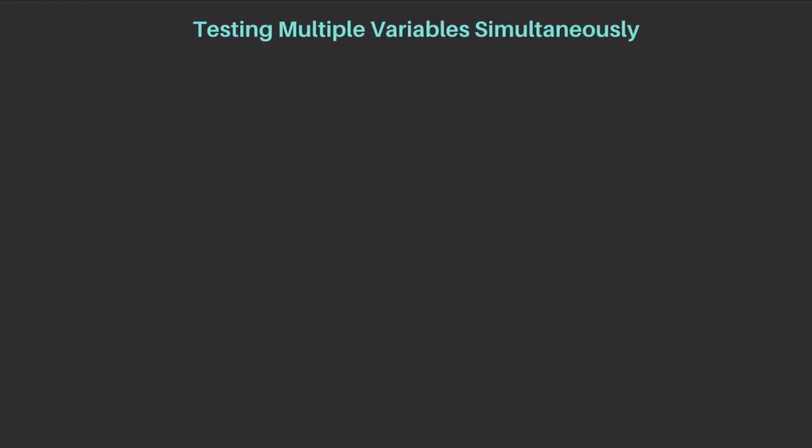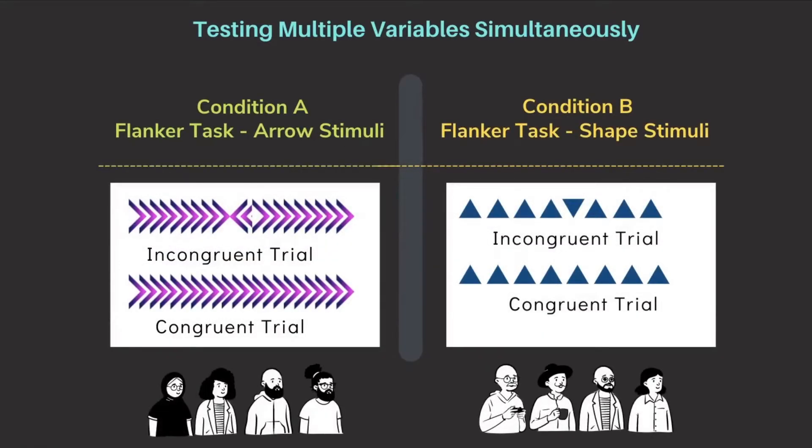Finally, another key advantage of the between-subjects design is that it allows us to collect a large amount of data within a short period of time by allowing us to simultaneously test multiple variables, conditions, and experimental groups. In the Flanker task example, we could collect data from all participants simultaneously across the various conditions and trial types.